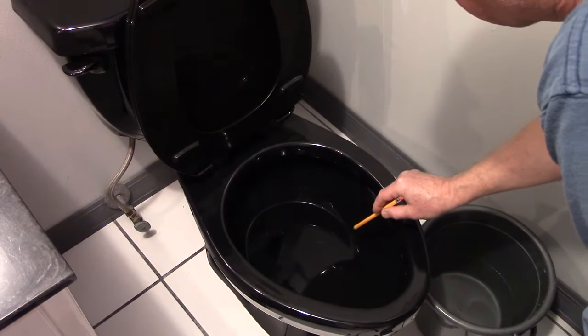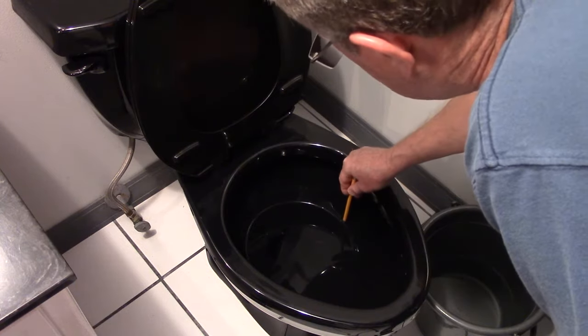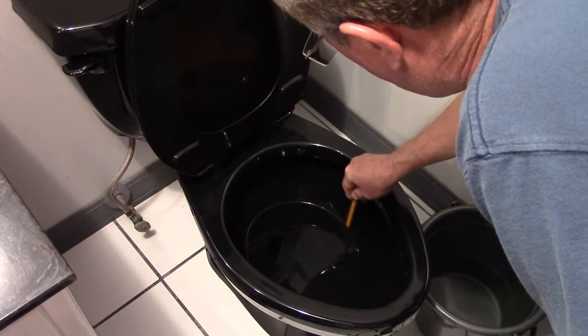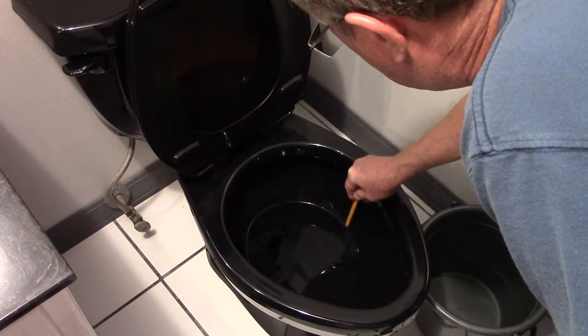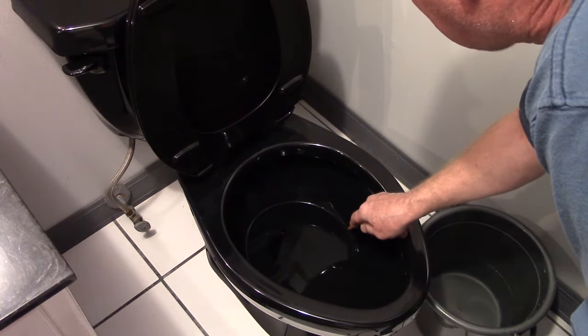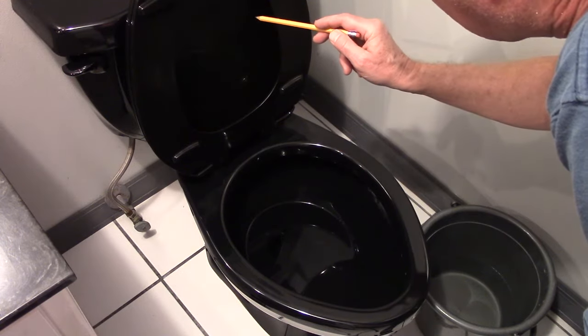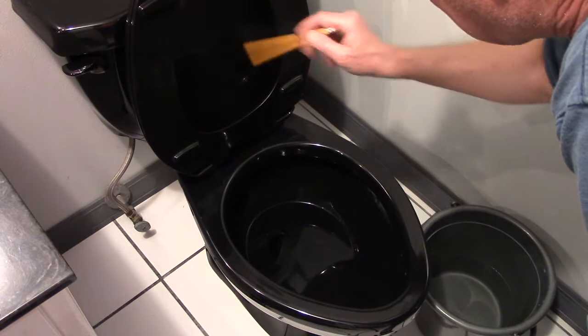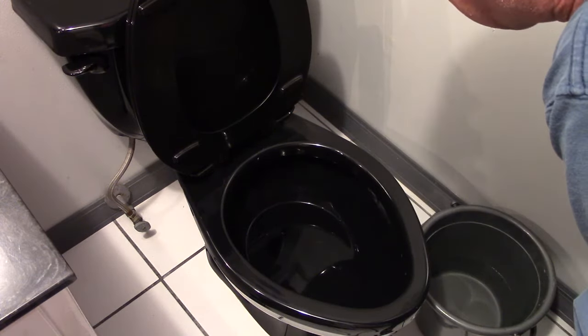After you find the height of the water in the bowl, take a pencil and mark that height inside the bowl. When we adjust our fill valve, we want to make sure it's stopping at this height when it turns off filling the tank. So we want it to stop filling the tank at the right height and the bowl at the same time.